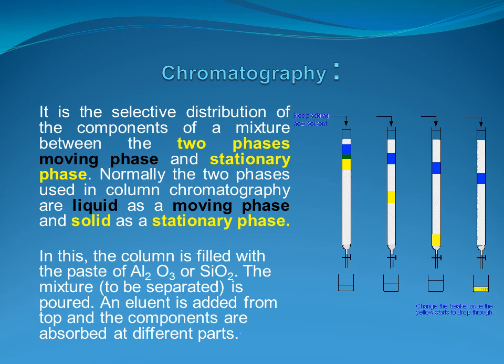A solvent moving phase is added from the top. As it moves, the different components are absorbed on different parts of the column. Depending upon the physical state of the moving phase, the chromatographic methods are named as gas chromatography, thin layer chromatography, paper chromatography, etc. This method is very useful for purification of elements found in traces. Column chromatography is used when impurities and the element to be purified have less difference in their chemical properties.